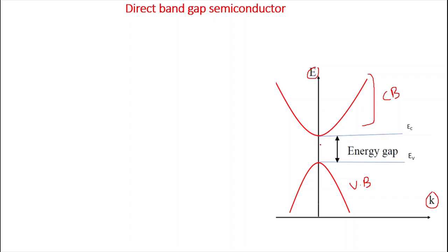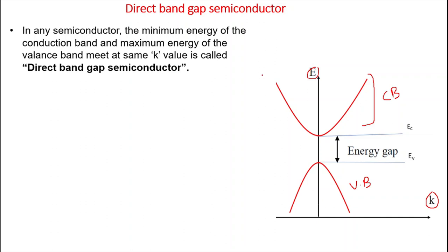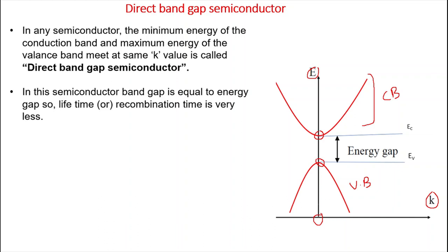In the case of direct bandgap semiconductors, the minimum energy of the conduction band meets the maximum energy of the valence band at the same k value — that is called a direct bandgap semiconductor. In this semiconductor, the band gap is equal to the energy gap, and because of that the lifetime or recombination time is very less.